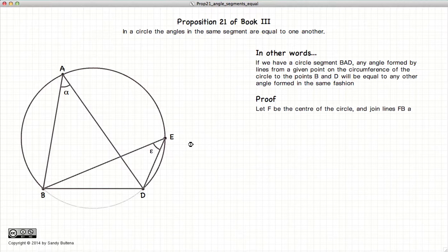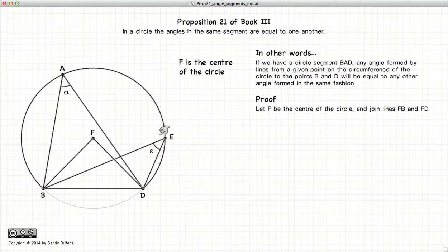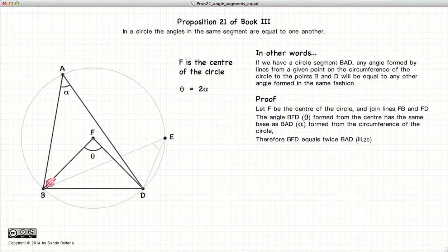Now to prove this, first let's draw the center of the circle F. Now BFD, theta, is going to be equal to twice alpha, according to Proposition 20 of Book 3.